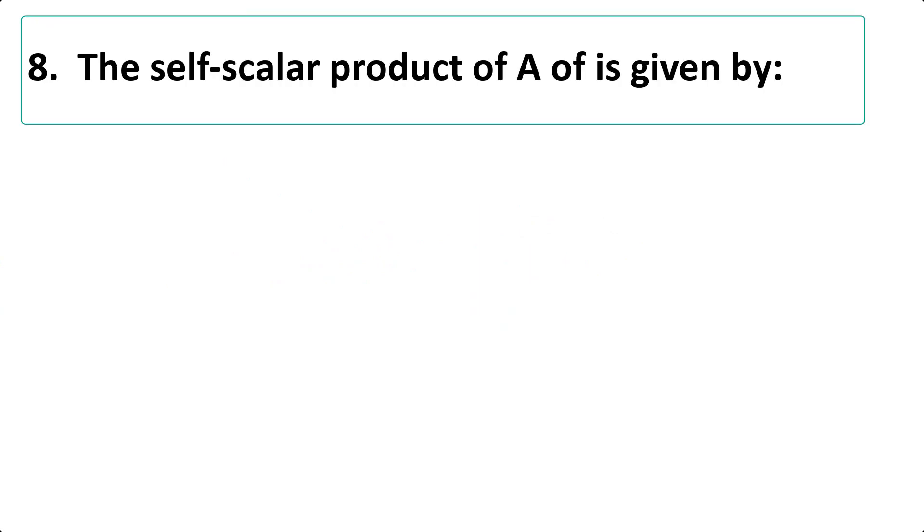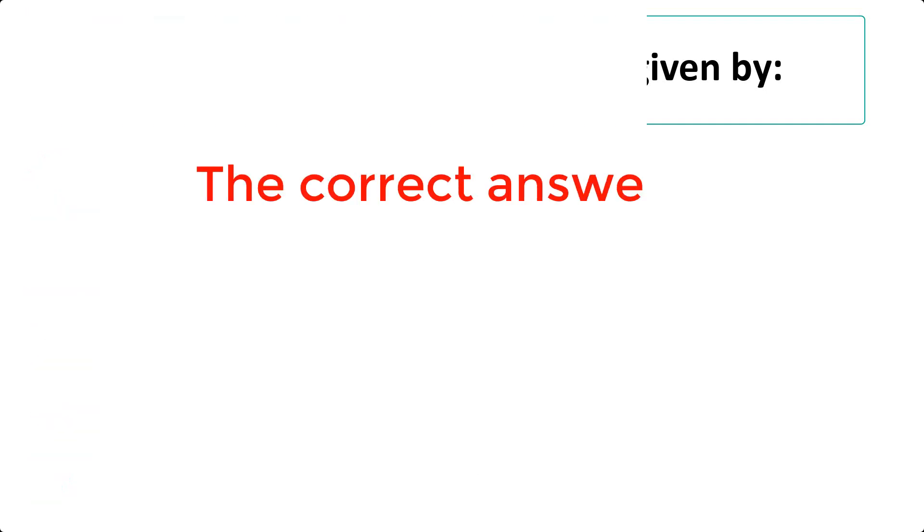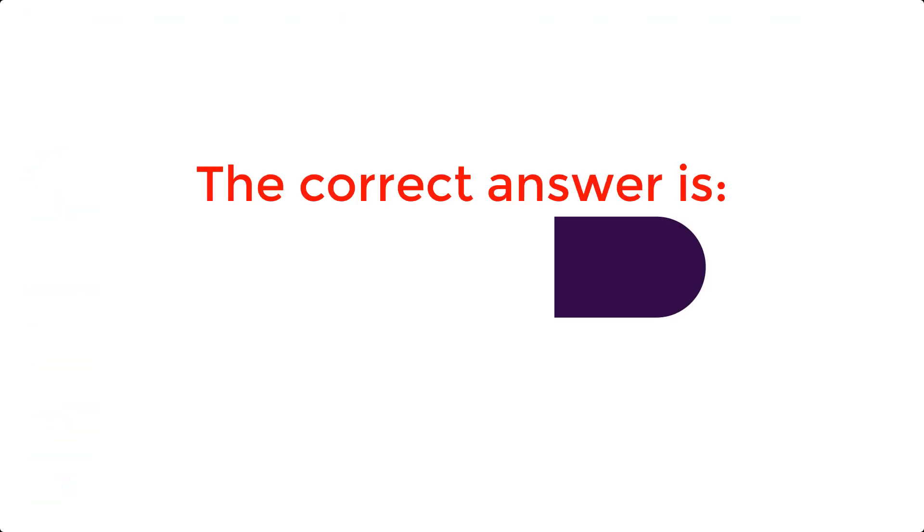The self-scalar product of a is given by: a. 1 over a b. a c. A square d. None of above. The correct answer is c. A square. Question 7.